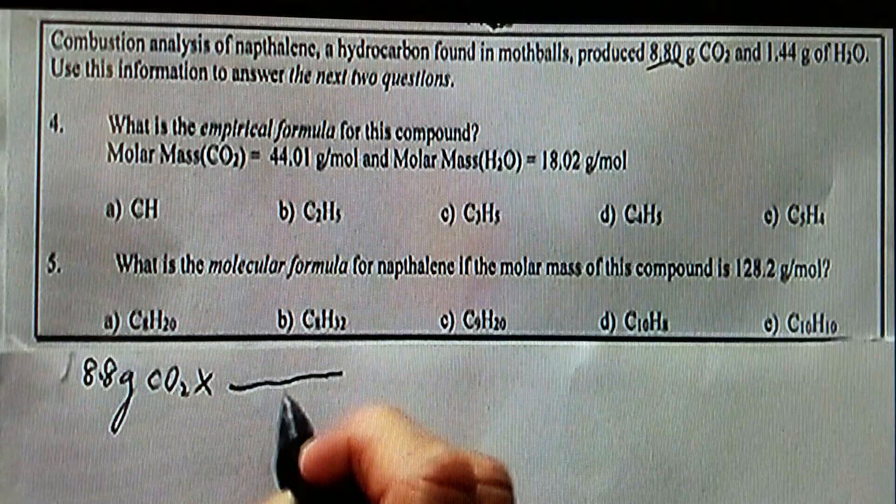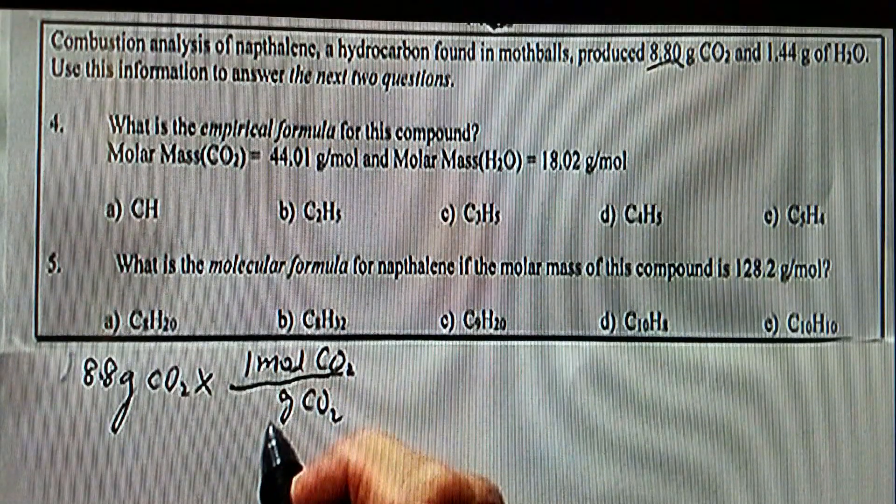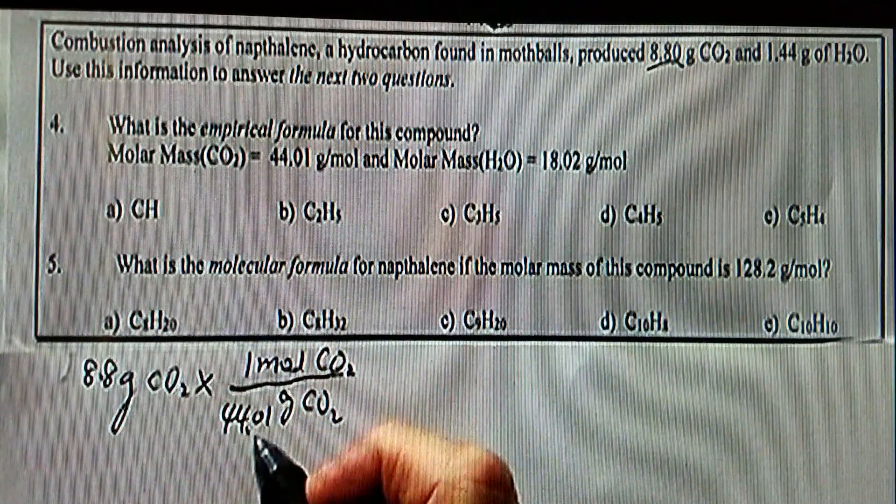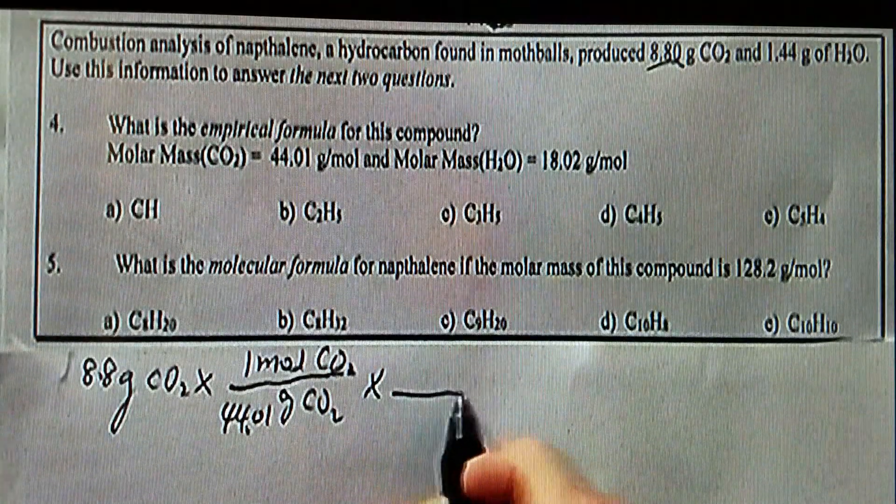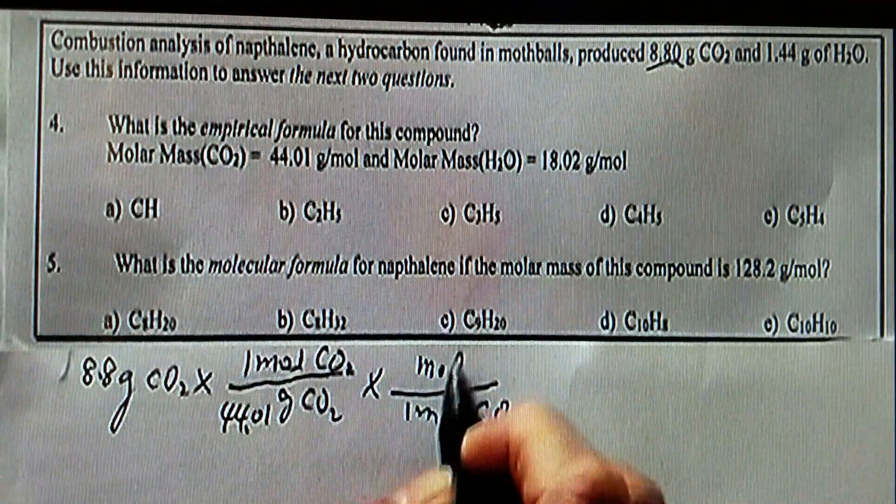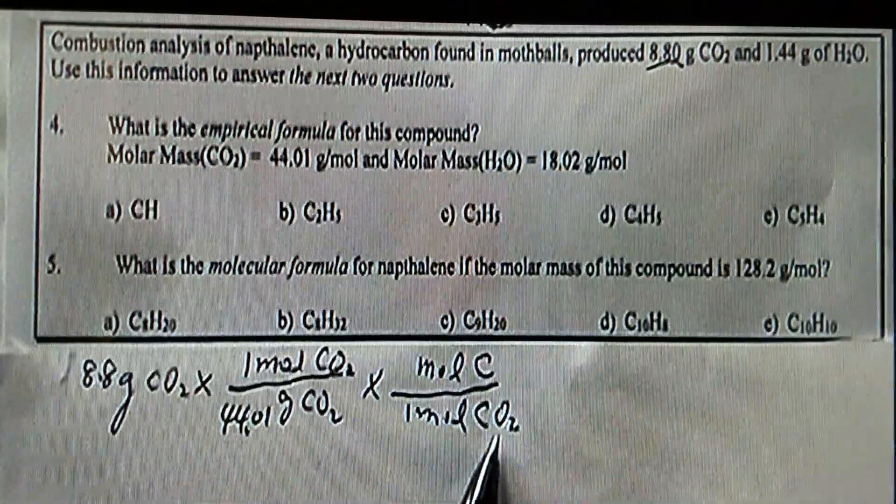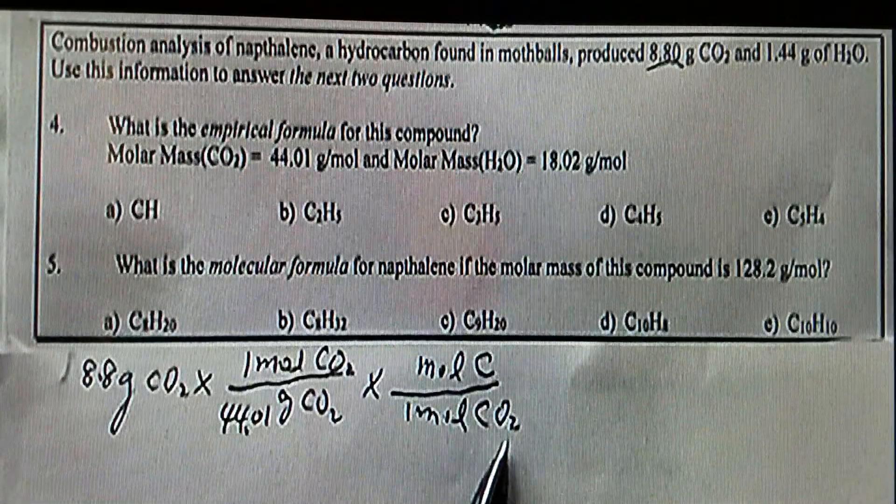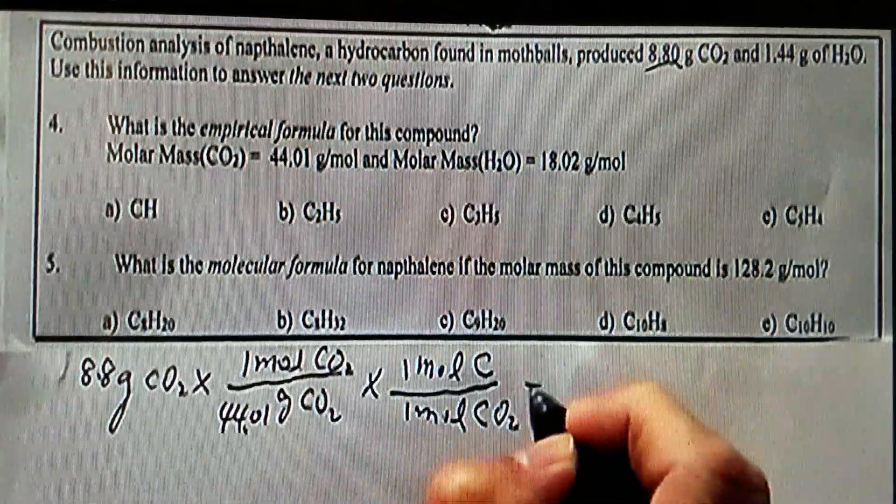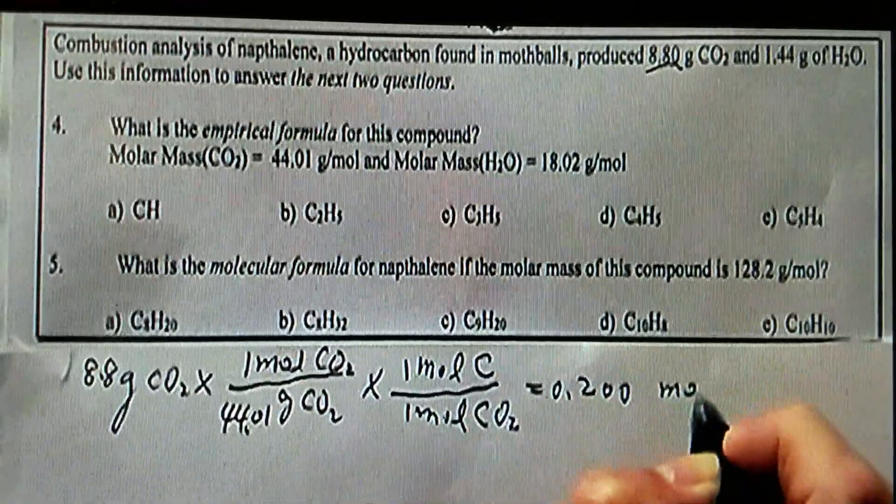We are converting from grams of CO2 to moles of CO2 using the molar mass, which should be 44.01 grams. And now we have to convert from moles of CO2 to moles of carbon. As you can see, one mole of CO2 contains one mole of carbon, or in other words, one CO2 molecule contains only one carbon. Therefore, the mole ratio should be one to one. Now it should yield 0.2 moles of carbon.